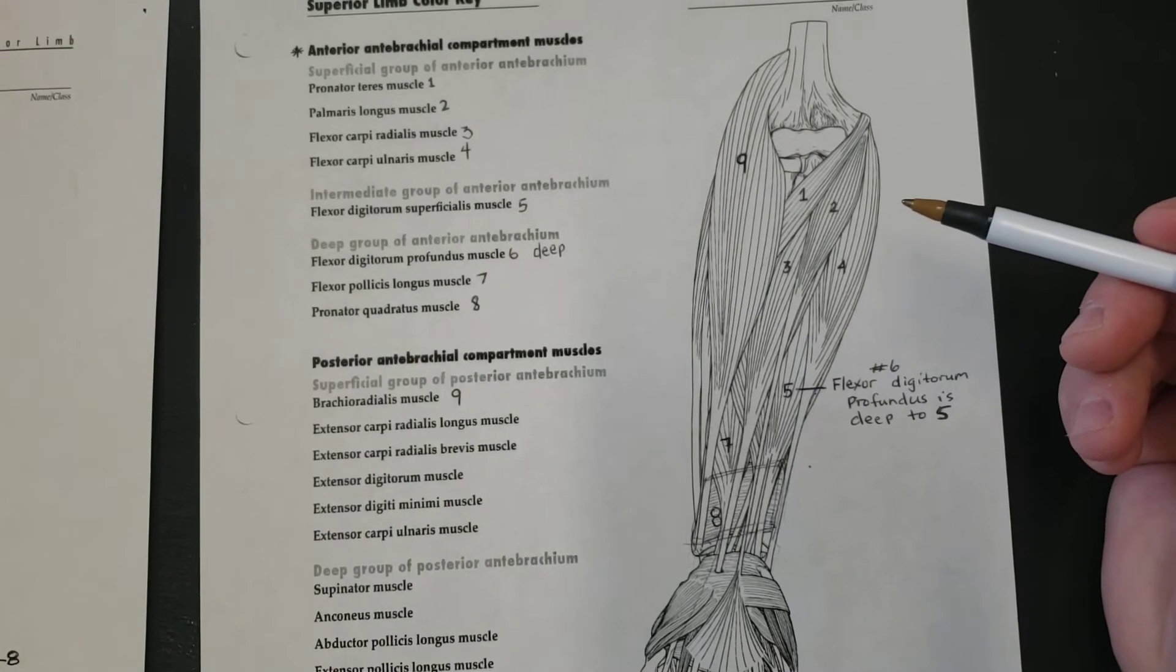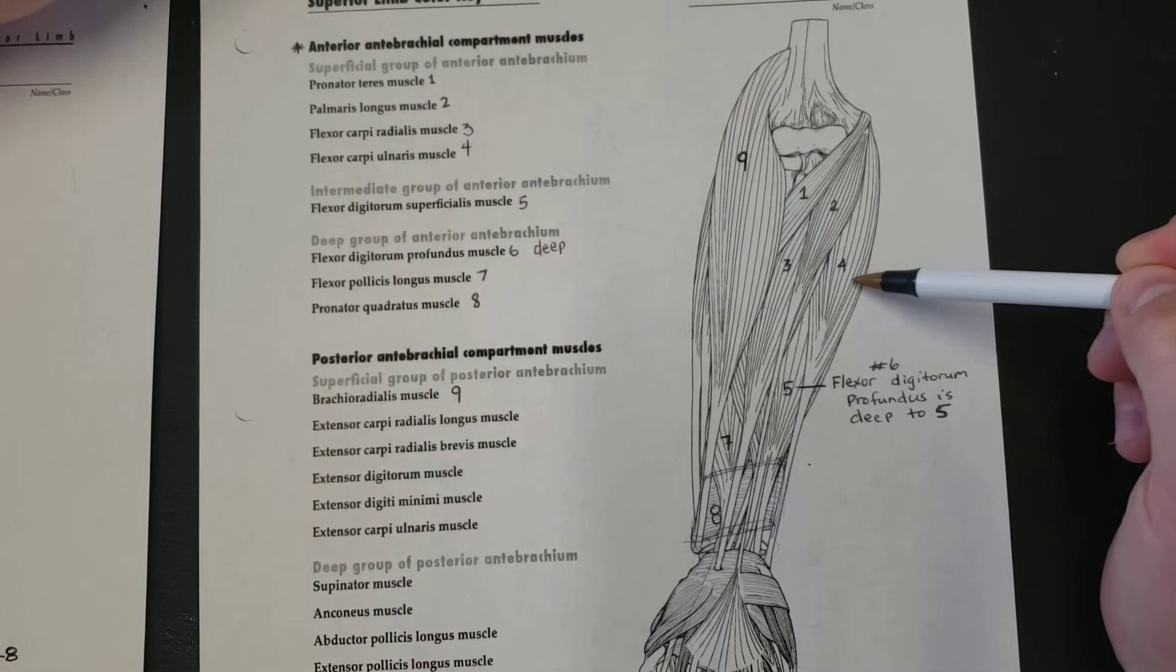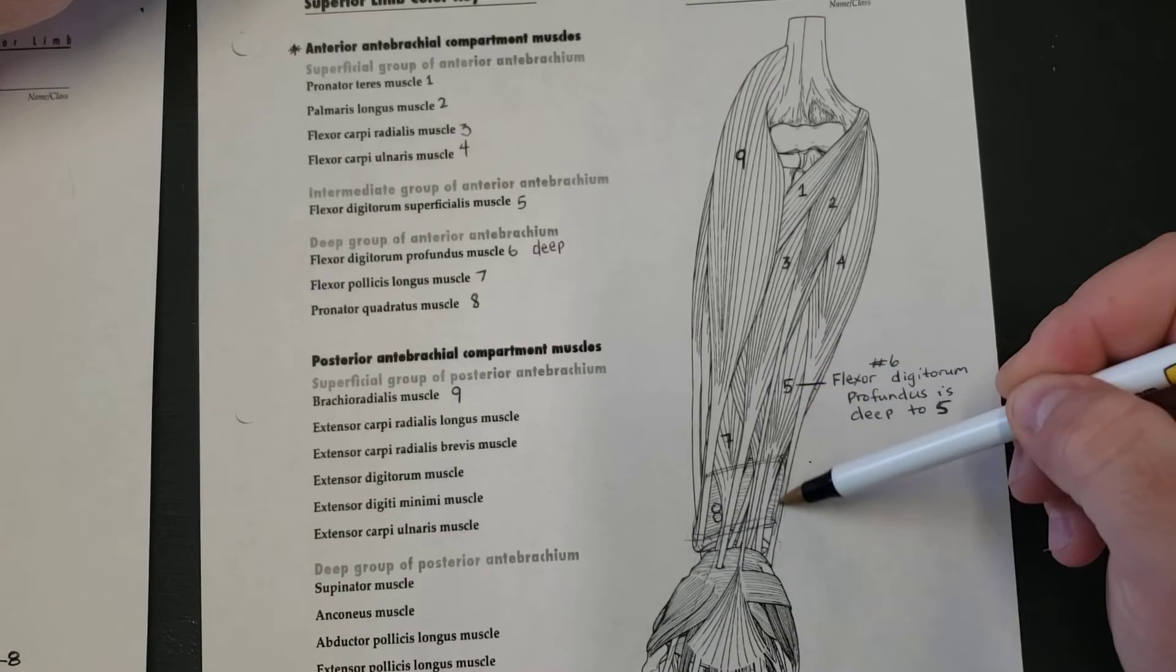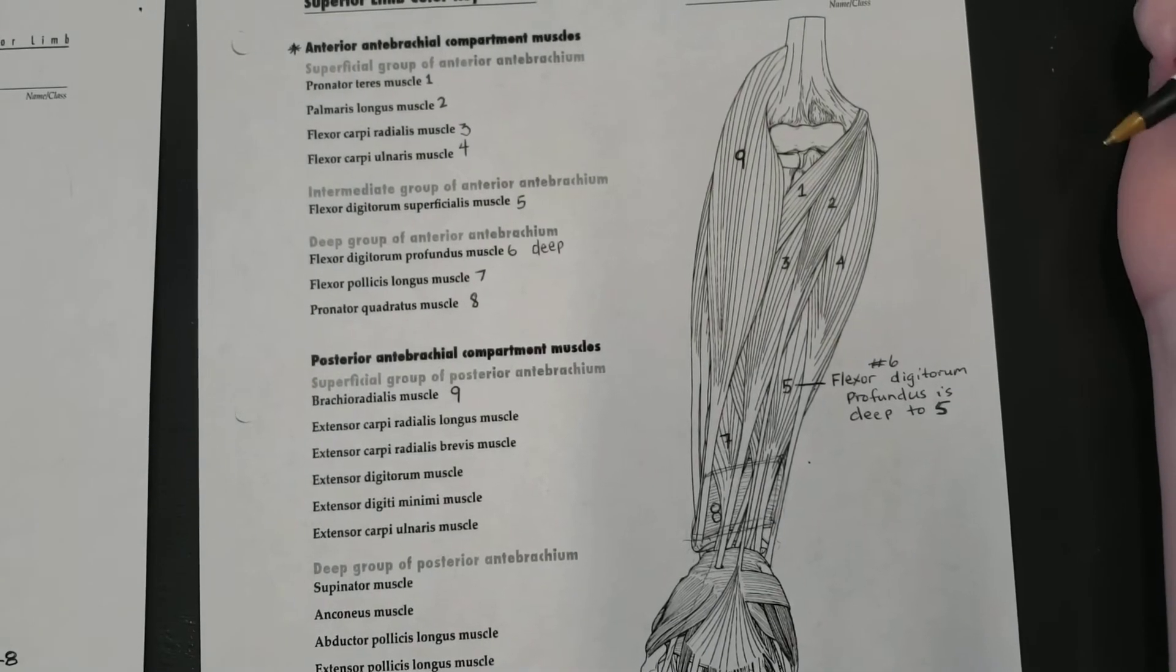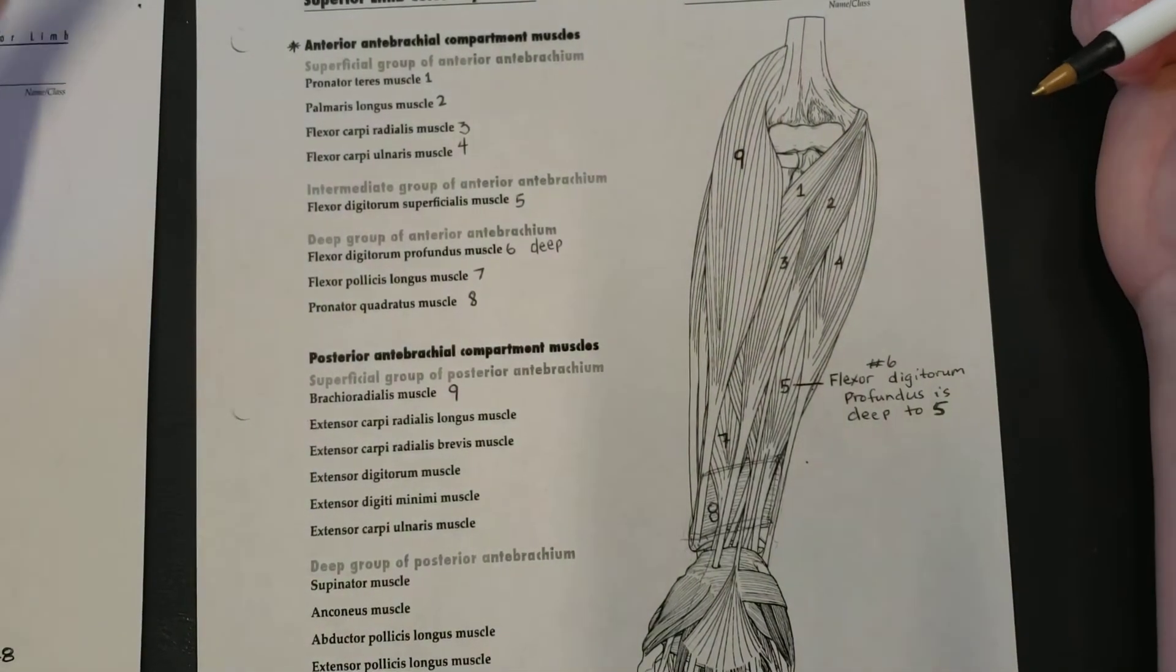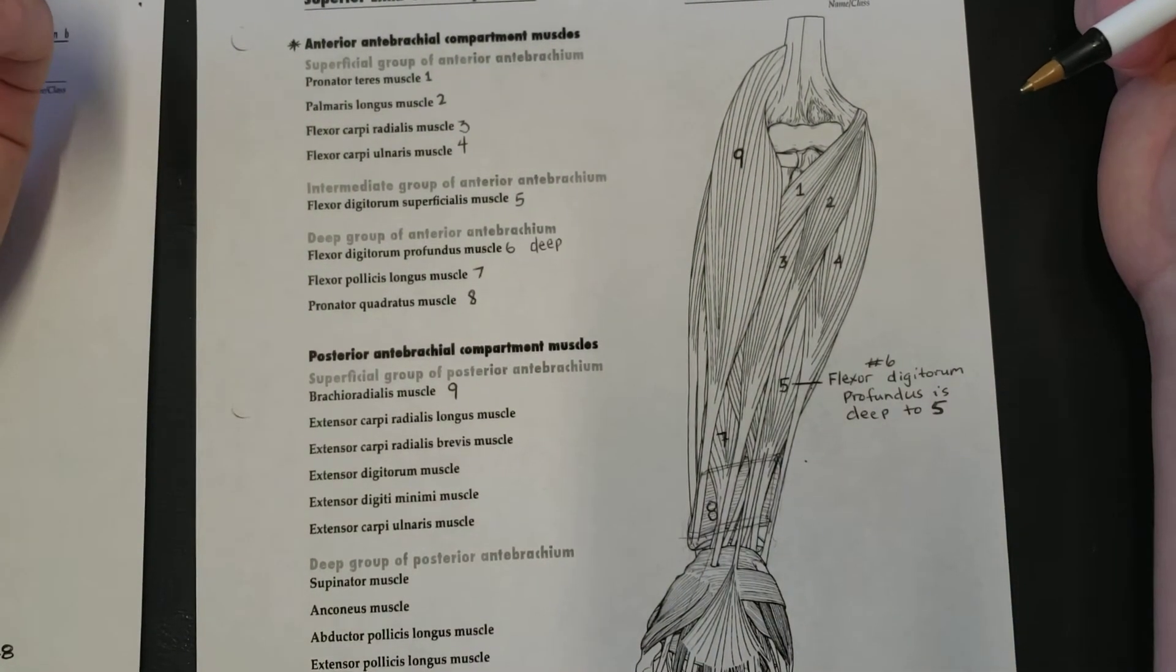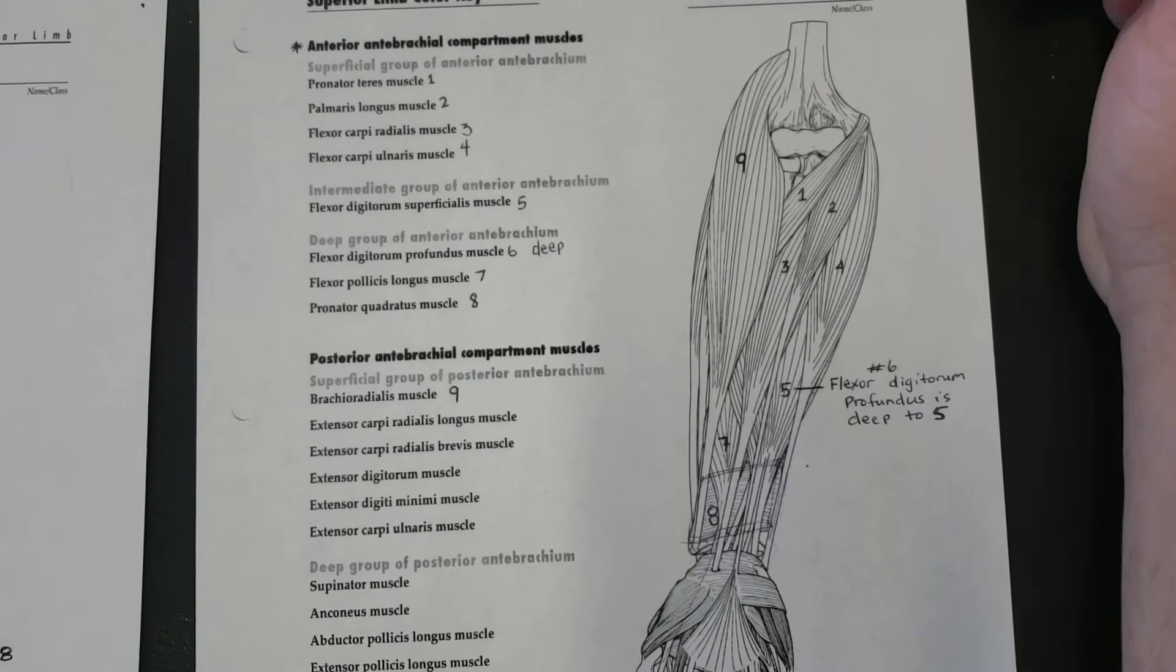Number four, it's found here, flexor carpi ulnaris. Big chunky muscle and that goes down. When we're talking about carpi, the word carpi, what does that sound like? It sounds like carpals, right, your carpals.